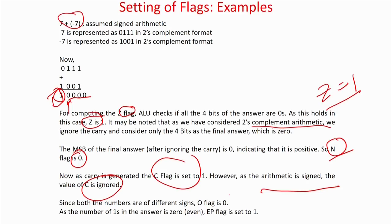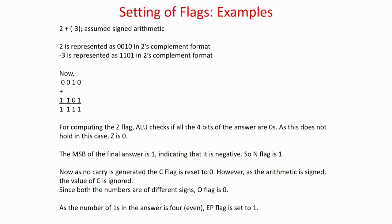So, lots of flags will be there and based on the values the flags will be set or reset. But which flag has to be ignored has to be decided by us. Taking another example: 2 + (minus 3), i.e., 2 minus 3. This is the two's complement implementation. The answer should be minus 1.